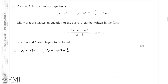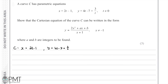The first step is to rearrange the expression for x to get it in terms of t. We write x + 1 = 2t, and then isolate t by dividing by 2, giving us t = (x + 1) / 2.